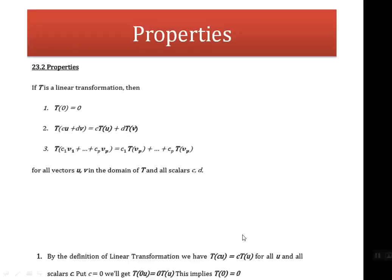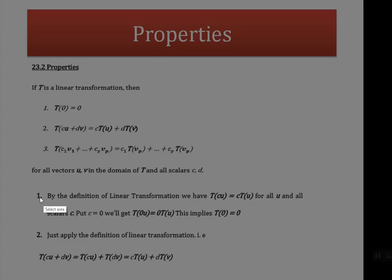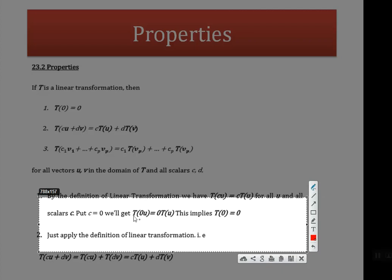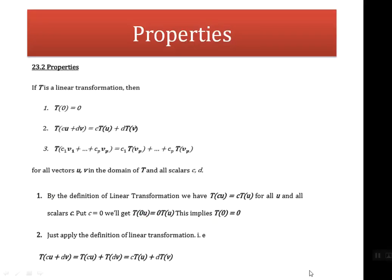The proof that T(0) = 0: by definition of linear transformation, T(cu) = c·T(u) for all u and all scalars c. Put c = 0: T(0·u) = 0·T(u). This implies T(0) = 0 — the transformation of the null vector is the null vector. Similarly, the second property with two scalars and two vectors can also be written within transformation, as explained above.